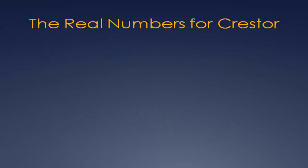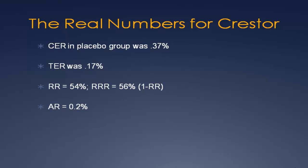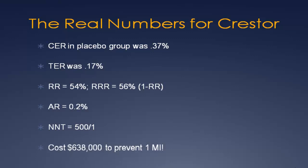Now the numbers. For the placebo group, major ischemic events occurred only 0.37% of the time. In the Crestor-treated group, the event rate was 0.17%. The relative risk — dividing 0.17 by 0.37 — is 54%. Subtract from 1 to get the relative risk reduction of 56%. Now you know where the headline percentages came from. Subtract the two event rates and you get an absolute risk reduction of 0.2%. The inverse gives the number needed to treat: 1 divided by 0.002 equals 500. An NNT of 500 means you would need to treat 500 people compared to no treatment to avoid one myocardial infarction — costing over $600,000 per year to avoid one event.